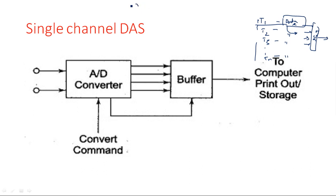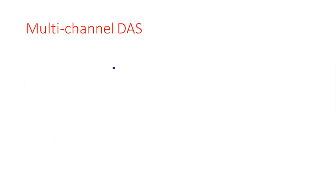This is the single channel analog-to-digital converter operation. A digital buffer is used — for example, 4-bit data such as 1010 is collected by the buffer and stored for further purposes. The analog-to-digital converter also receives a convert command input, and whenever this convert command occurs the analog data is converted to digital. This is what the single channel converter operation does.